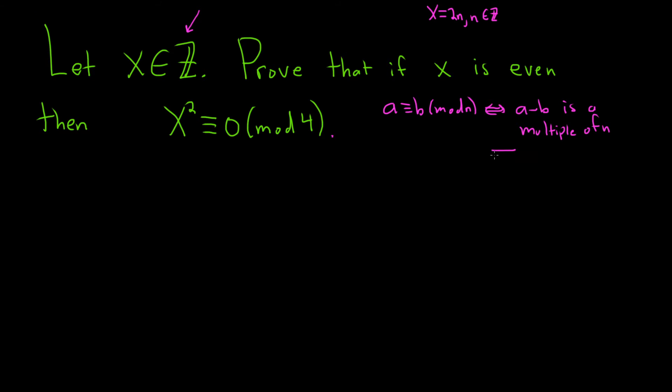So what does that mean? That basically means a minus b equals k times n for some integer k. So it's just easier for me to think of it this way - it's the same thing as saying it's divisible by n, but I like to use the word multiple. It's just easier to do the proofs, for me at least.